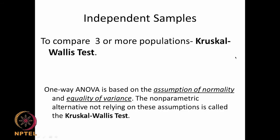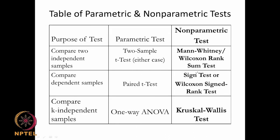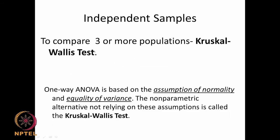If you want to compare three or more populations, and you have two populations then of course we can use the Mann-Whitney Wilcoxon rank-sum test, or if it is paired we can use the Sign test. But if we are having three or more populations, we resort to the Kruskal-Wallis test, because one-way ANOVA generally assumes normality and equality of variance. In a non-parametric situation we use this particular test.